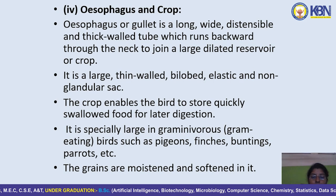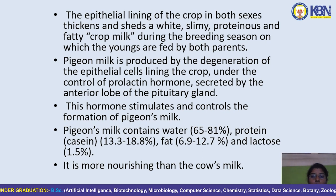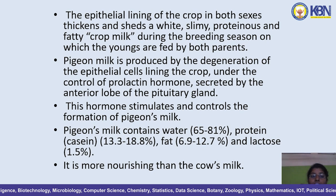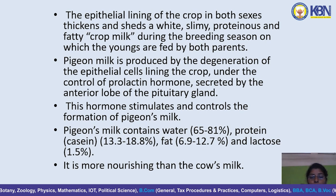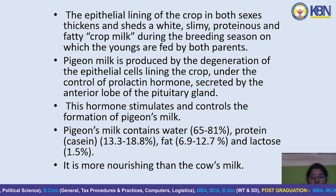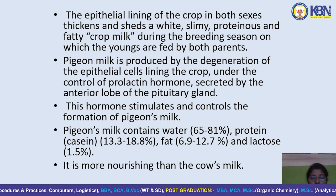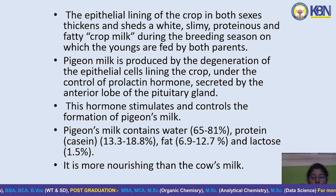The epithelial lining of the crop in both sexes thickens and sheds a white, slimy, proteinaceous, and fatty crop milk during the breeding season, on which the young are fed by both parents. Pigeon milk is produced by degeneration of the epithelial cells lining the crop under the control of prolactin hormone secreted by the anterior lobe of the pituitary gland. Pigeon's milk contains water 65–81%, protein casein 30.3–18.8%, fat content 6.9–12.7%, and lactose 1.5%.